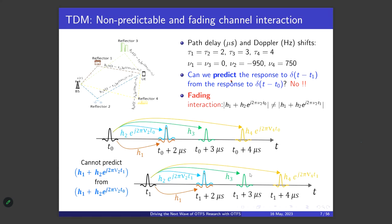Suppose we send a TDM pulse at t = t₀, i.e., input δ(t − t₀). At the receiver, because reflectors one and two share the same delay of 2 μs, we receive a superposition of their responses at t₀ + 2 μs. There is another received pulse at t₀ + 3 μs from reflector three, and one at t₀ + 4 μs from the mobile van, reflector four.